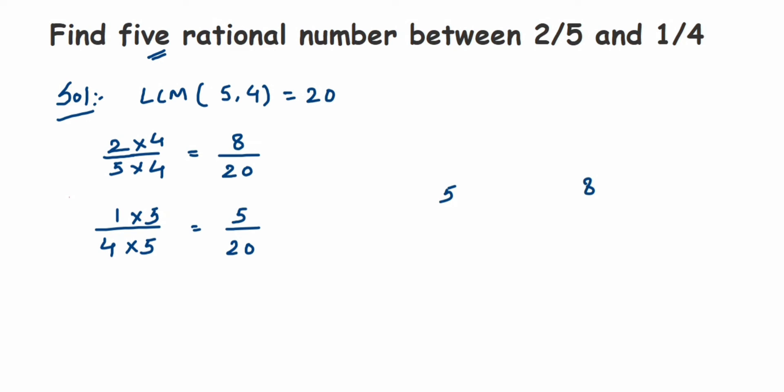I want more gap so that I can find out more rational numbers. Like I said, I'm going to find out another equivalent rational number. So instead of taking 8 by 20, I'm going to multiply with—let us take 5. You can take any number here. I'm just taking 5. So let's multiply with 5. I'll get 40 by 100.